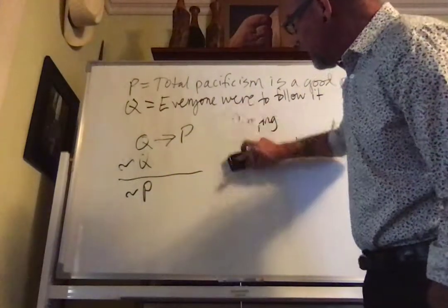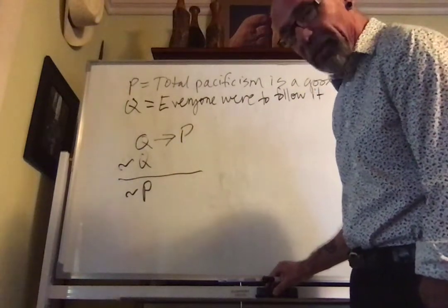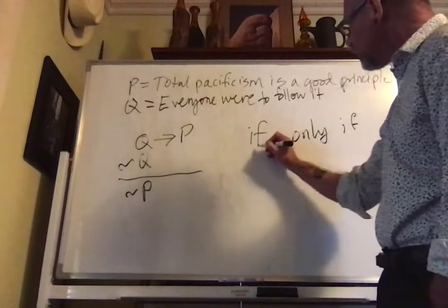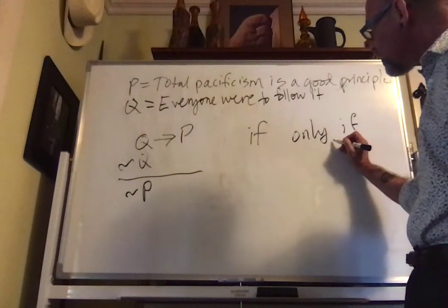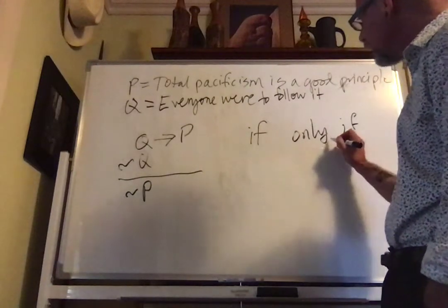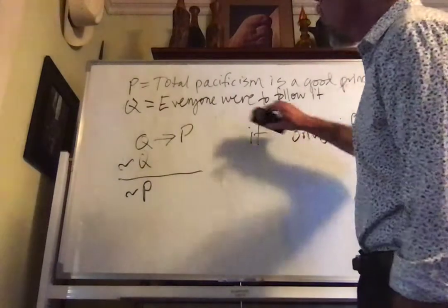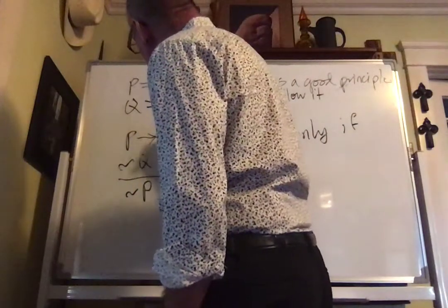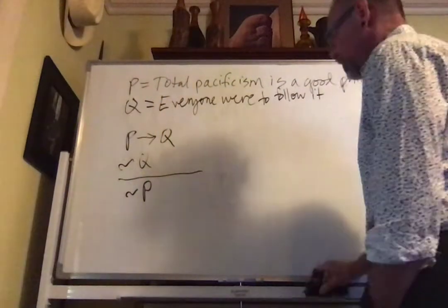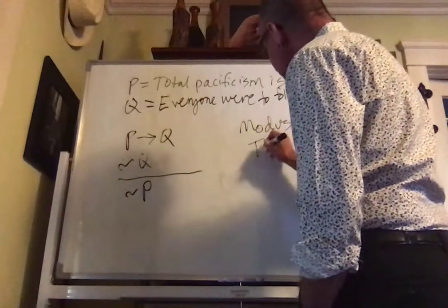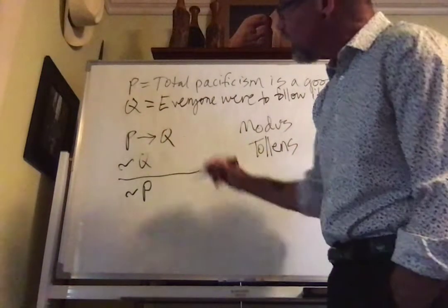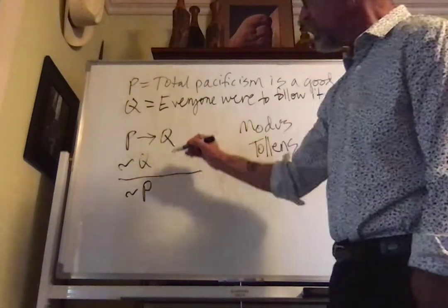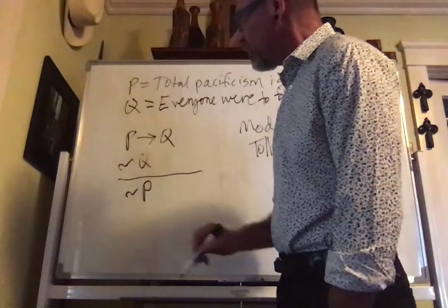More likely, his mistake is one that English speakers and writers make very frequently: we often use the word 'if' when what we really mean is the phrase 'only if.' Remember, 'if' introduces an antecedent, whereas 'only if' introduces a consequent. If Professor Harmon had used 'only if' instead of 'if,' his first premise, instead of being Q arrow P, would be P arrow Q. And now this would be a valid argument, because it would be an instance of the form modus tollens. In modus tollens, one premise is a conditional, the other premise is the negation of the consequent of the conditional, and the conclusion is the negation of the antecedent of the conditional.